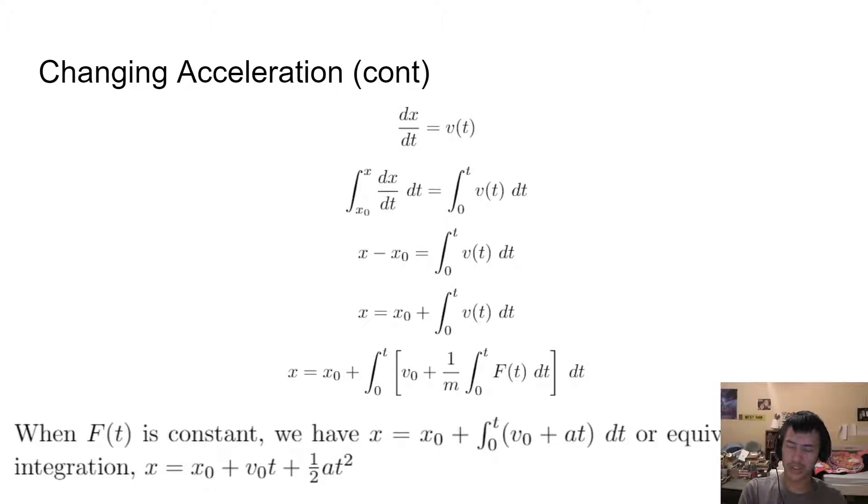On the left, we use our fundamental theorem of calculus, and we see the integral of a derivative is just the function evaluated at its bounds. So we have x minus x0 equals, and then we can't really do anything with the right side of our equation. Then we just add x0 to both sides, and we have this formula.